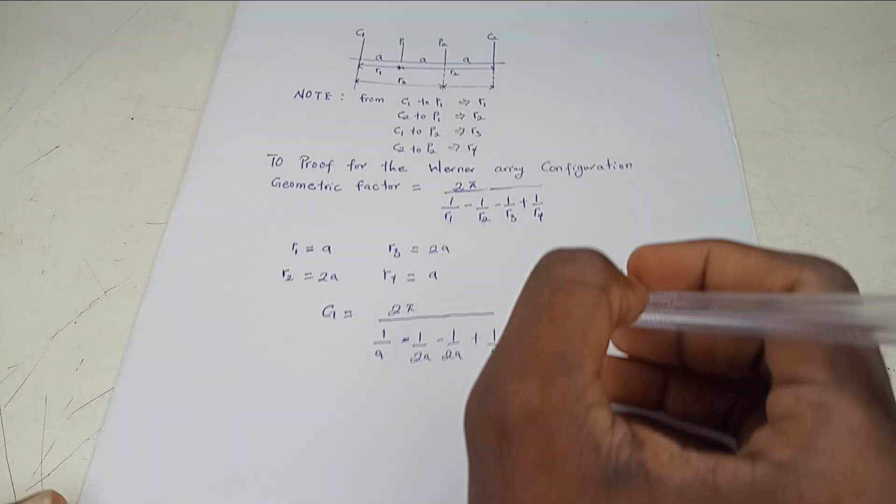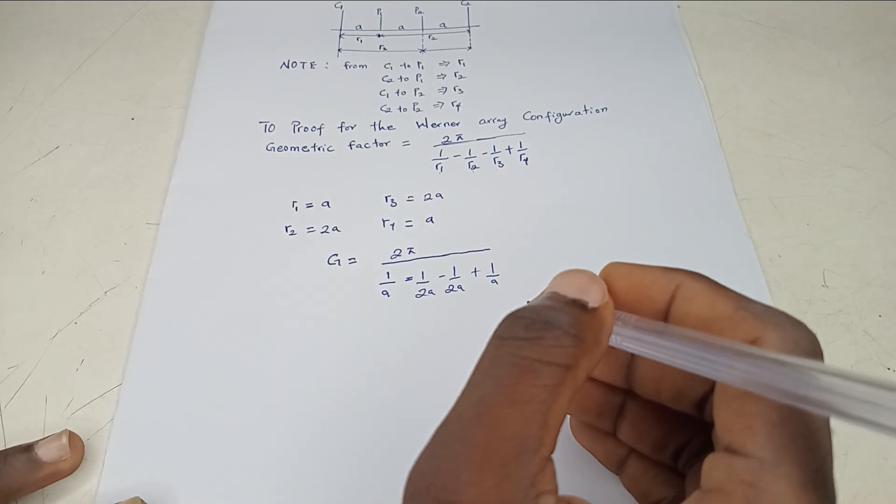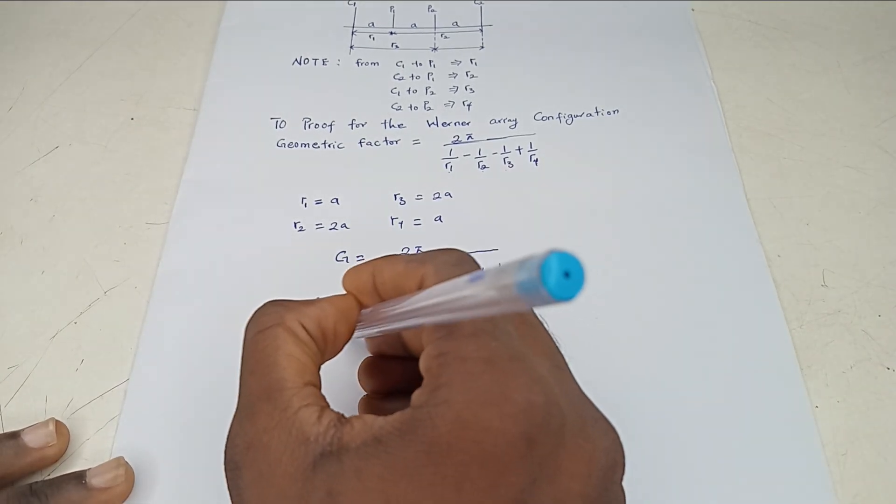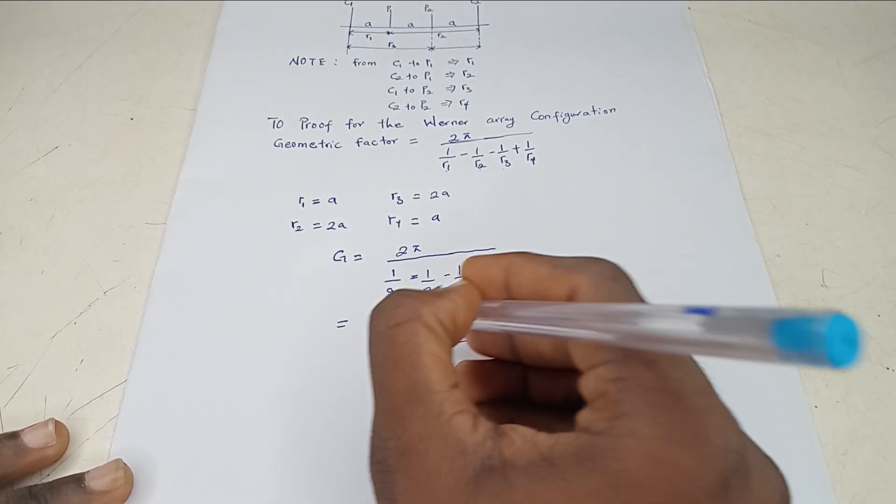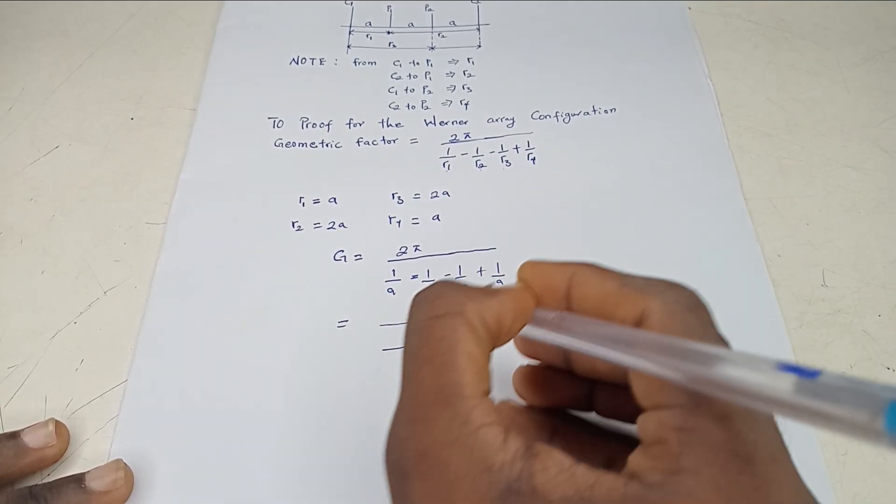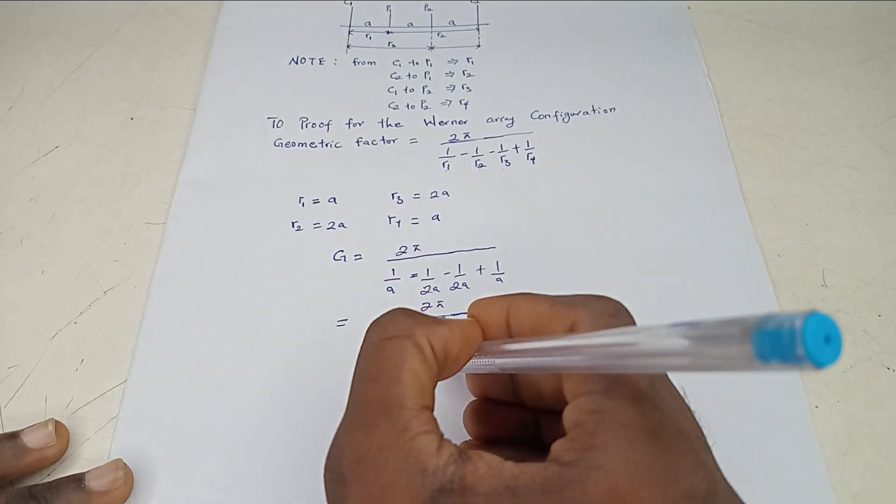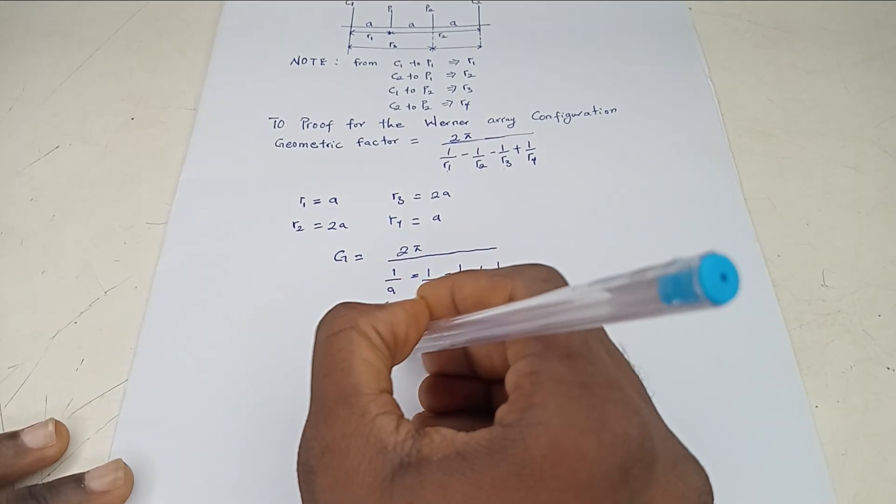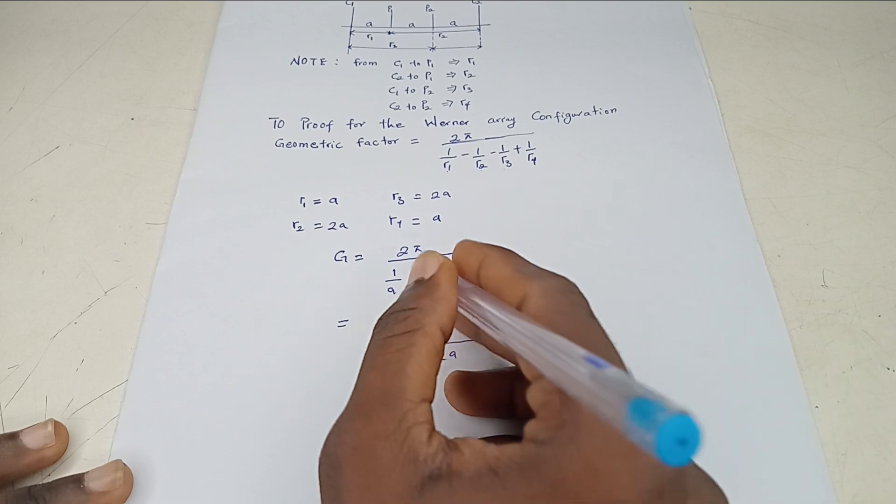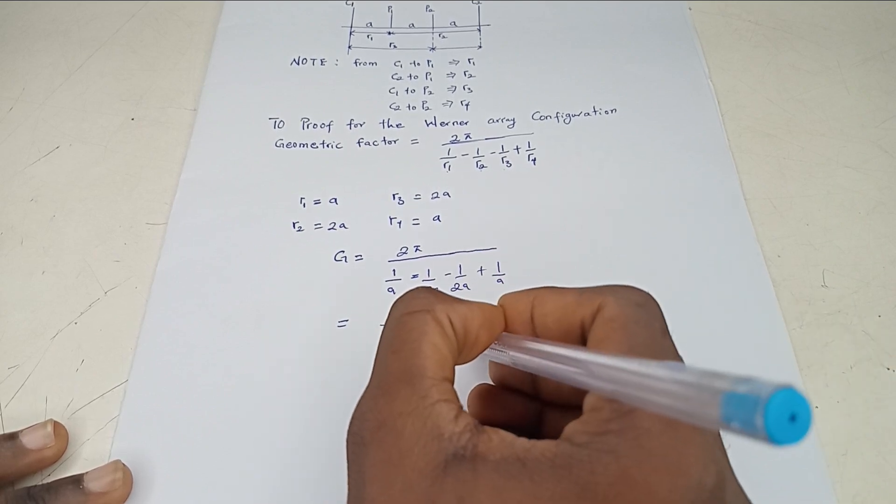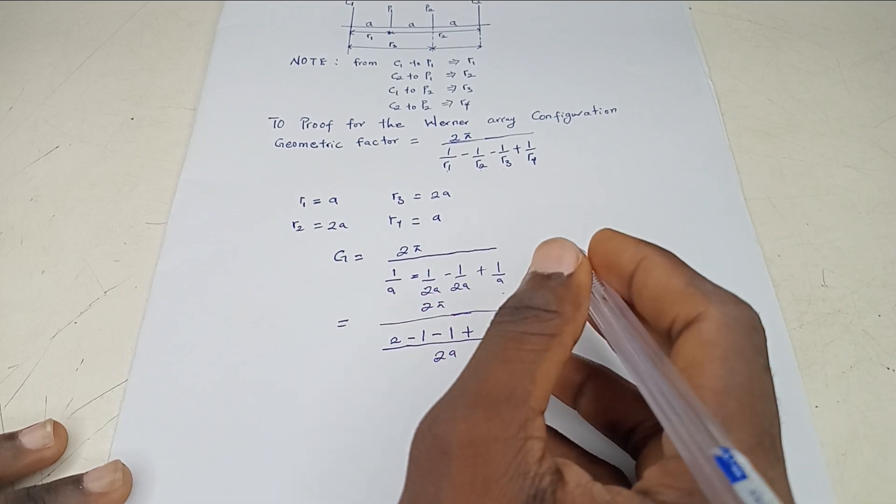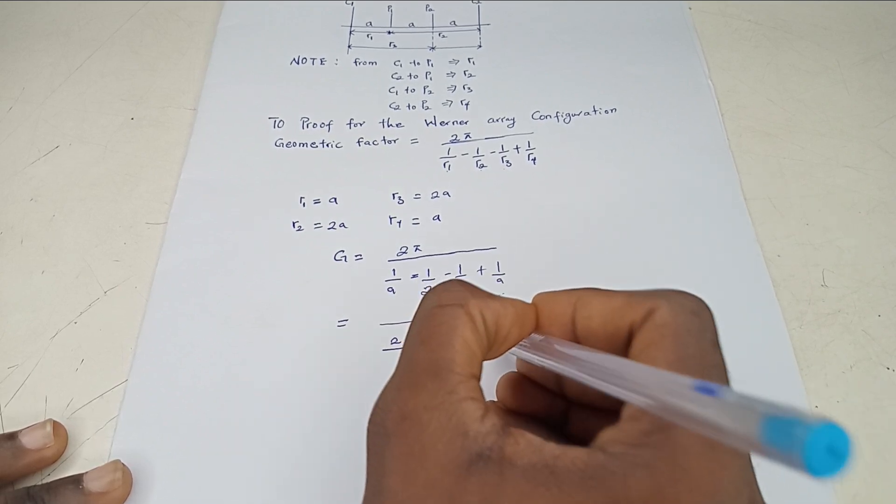So the next thing you are going to do is to find the LCM. The LCM of your denominator of your fractions is 2A. A in 2A, 2. 2 times 1, 2. Minus 2A in 2A, 1. 1 times 1, 1. Minus 1. Plus A in 2A, 2. 2 times 1, 2.